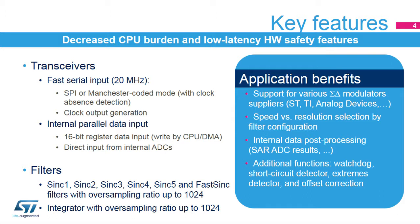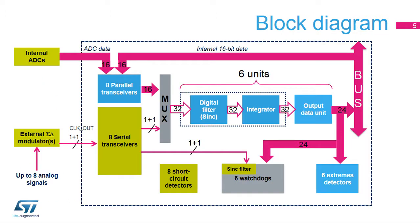Applications can be designed with various types of sigma-delta modulators from various vendors. The parallel data input feature can perform post-processing of any internal data, for example internal ADC streams, audio data filtering, etc. The entire digital filter for sigma-delta modulators interface consists of 8 serial transceivers, 8 sync filter parts and integrators, 8 output data units, 8 analog watchdogs, 8 short-circuit detectors, 8 extreme detectors, and 8 parallel data input registers.